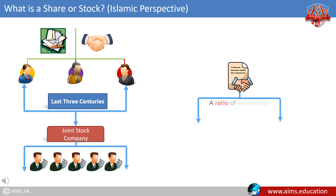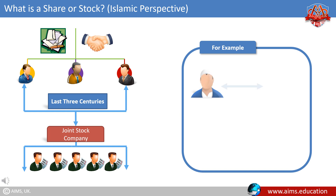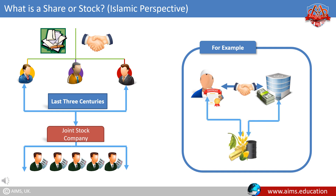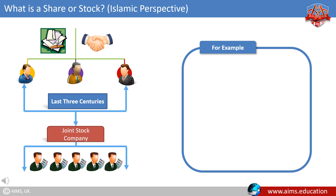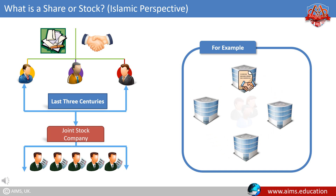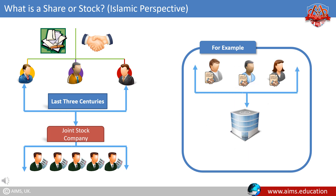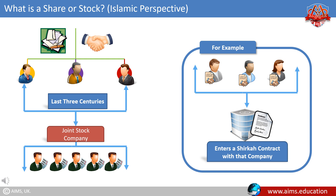Shares may be defined as a ratio of ownership. For example, Ali decides to become a partner of a company and he purchases 10,000 out of its total 1 lakh shares. A certificate of 10,000 shares is issued to Ali against his payment, and so Ali becomes the partial, or 10%, owner of that company and its assets. Shares float in the market and invite people to purchase them. Any person who purchases shares actually participates in the business of that company and enters a shirka contract with it.